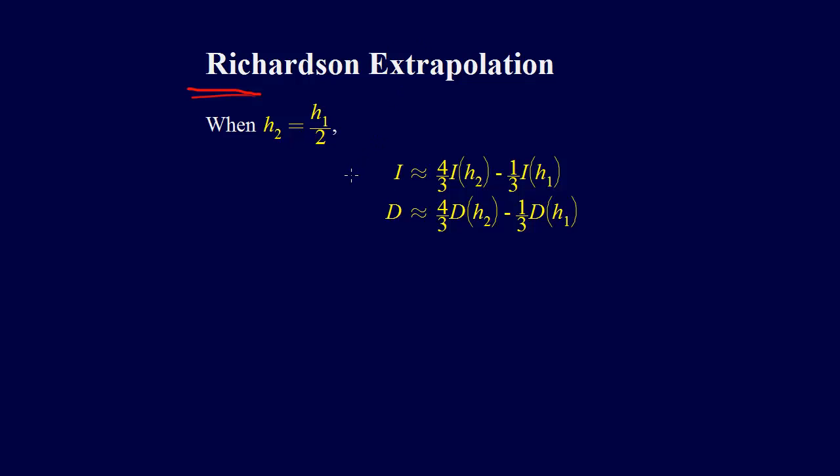For this discussion, we're actually going to start with the Richardson extrapolation for integration formula. If you'll recall, we derived the formula: the integral can be approximated by 4 thirds I(H2) minus 1 third I(H1), where H2 is half the step size of H1.